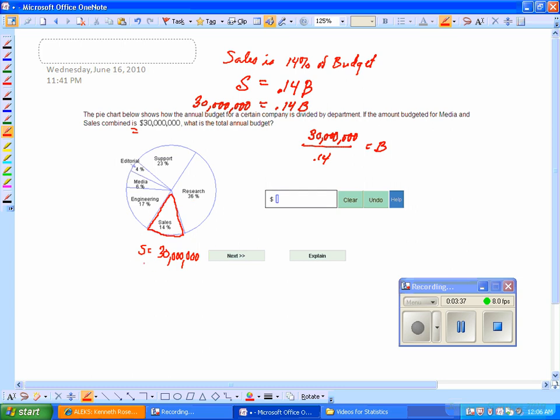14 is sales, 100 is the budget. 30 is in percentage, right? 14 to 100, 30 million dollars to B million dollars. You can set it up like that and do some cross multiplication. When you cross multiply, 14B equals 3,000—or if you're including all the zeros, a lot more zeros. 30 times 100 equals 14 times B, and you divide by 14 and you get the same thing.